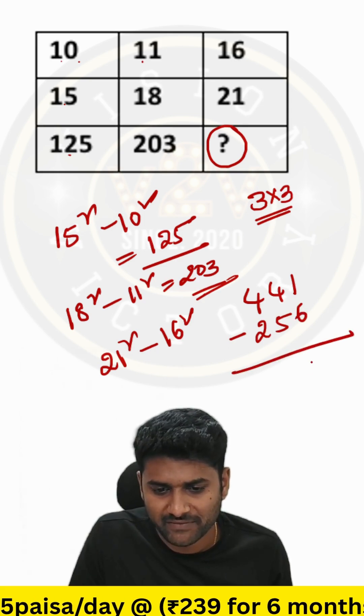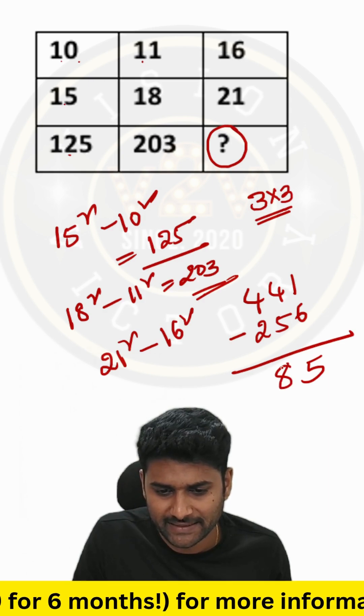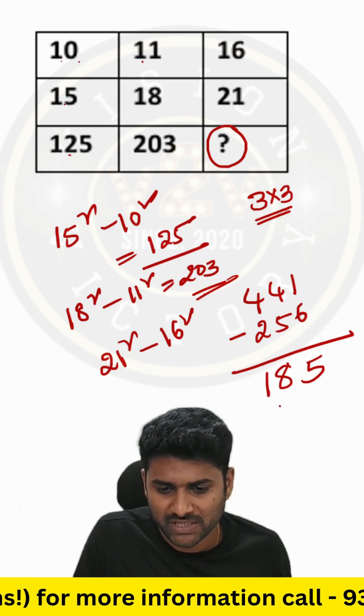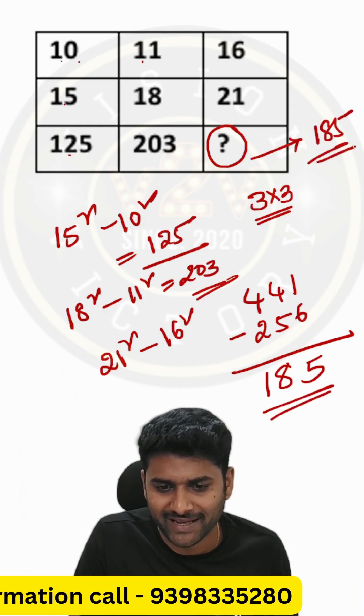Find the difference: 11 minus 6 is 5, again 13 minus 5 is 8, here 3 minus 2 equals 1. So you should replace this question mark as 185.